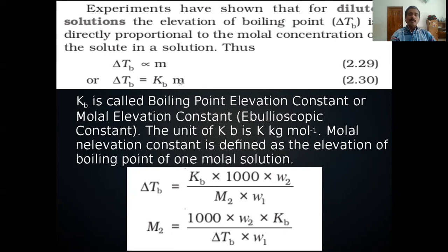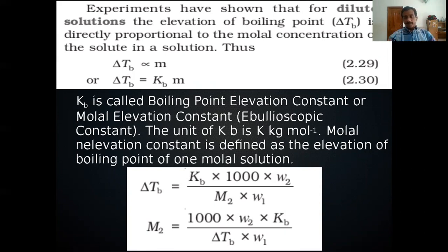If molality M equals 1, then ΔT_b equals K_b. So K_b is the elevation of boiling point of a one molal solution. The aim of colligative property measurement is to determine the molecular mass of an unknown solute.